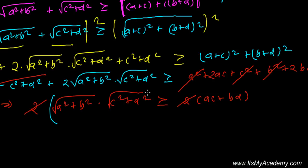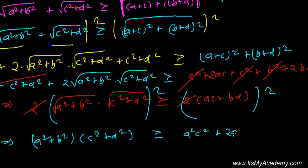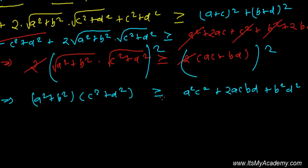Now squaring both sides again: the left side becomes (a² + b²)(c² + d²), and squaring the right side gives a²c² + 2ac·bd + b²d².